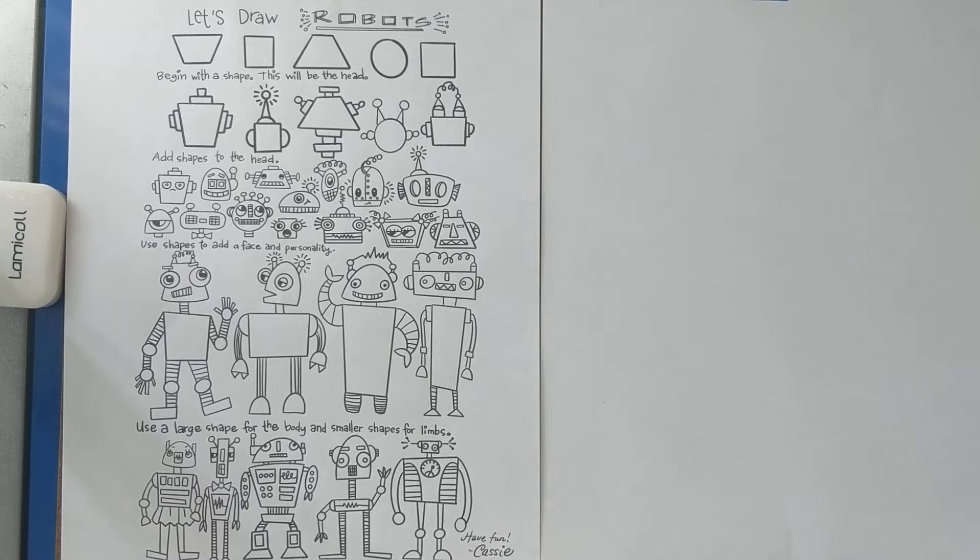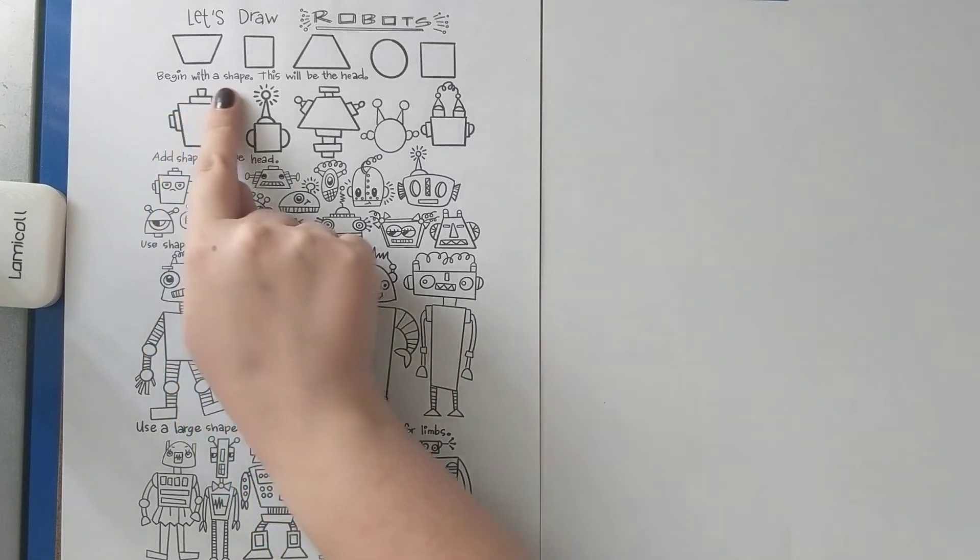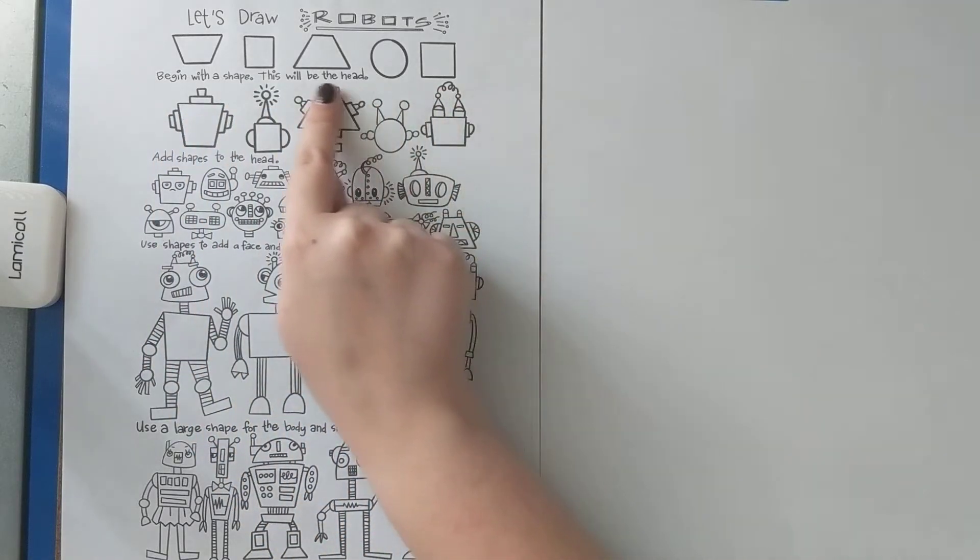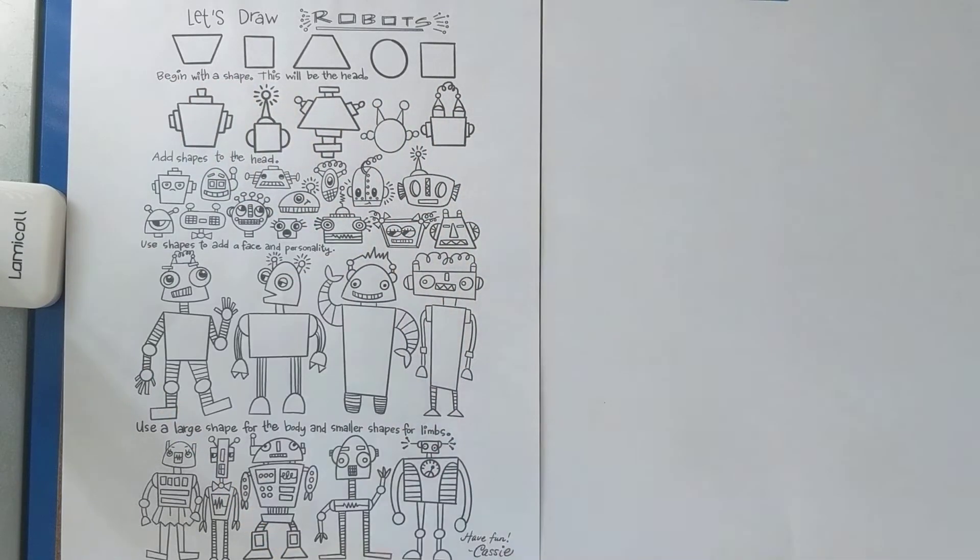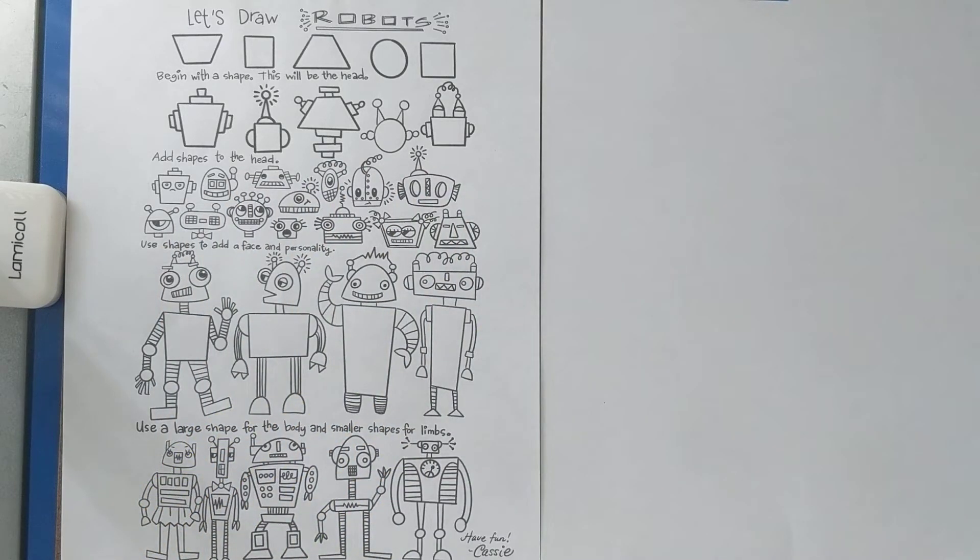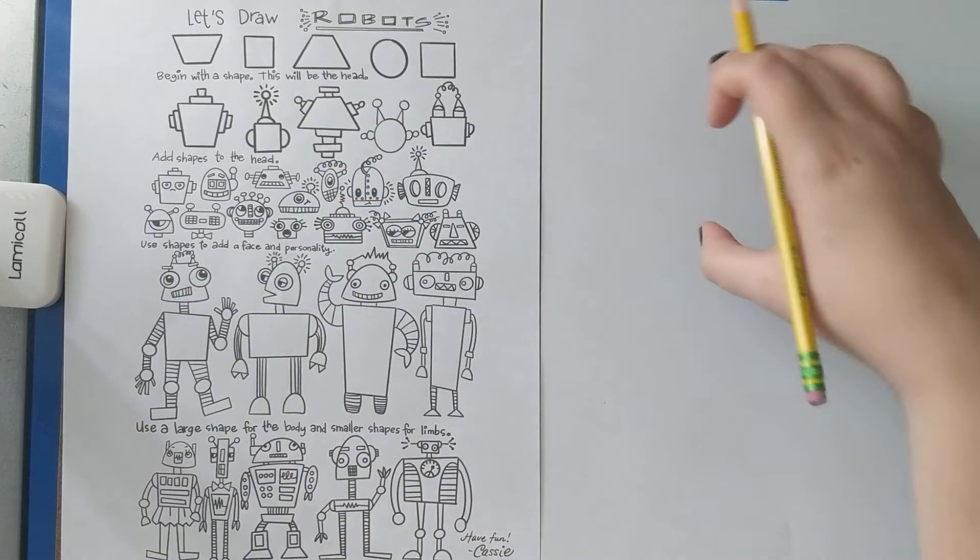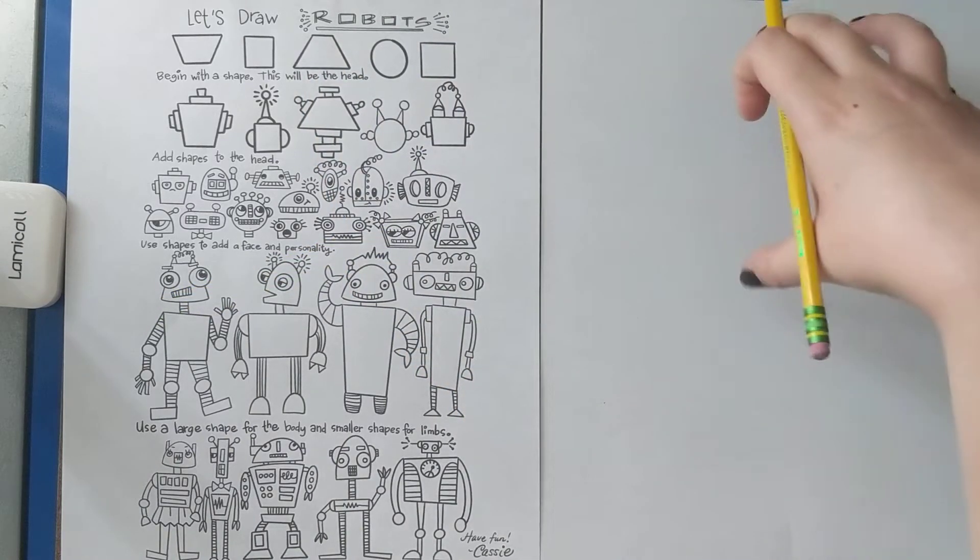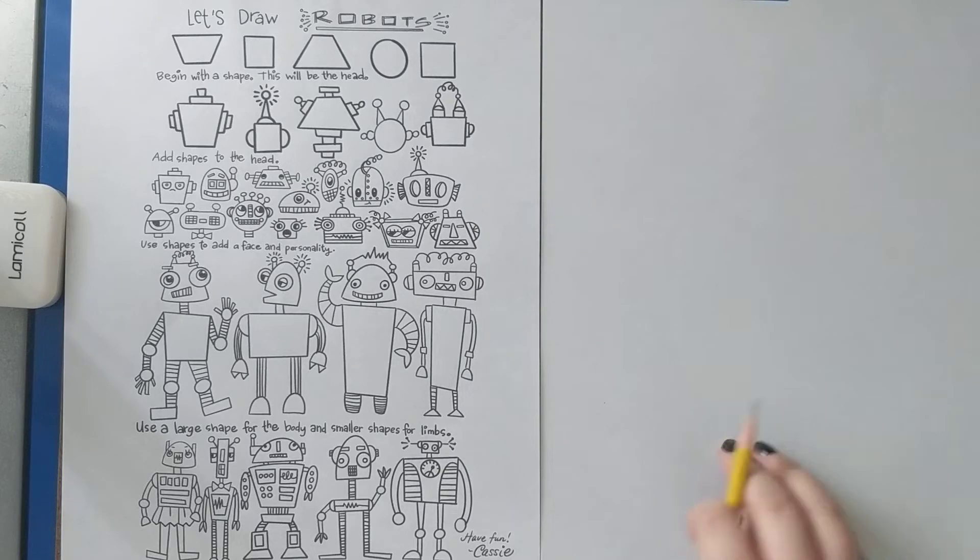The first thing that you want to do is to draw the head. In order to do that we want to pick a really basic shape. If you look at the top of this picture we have lots of different ideas but you don't have to use one of those. You could use anything you really want. But you want it to be a big shape, big enough so that you can add details later like the whole face. So if I'm looking at this paper I think I really like this shape. I'm gonna make it up kind of at the top of my paper and I want to make my robot big enough to fill my whole paper.